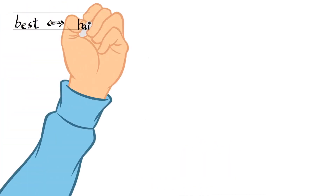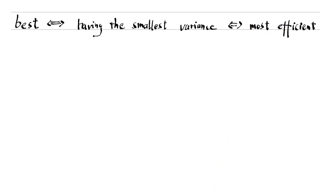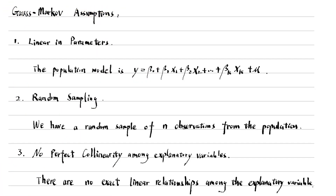BEST is defined as having the smallest variance. In other words, among all the linear unbiased estimators, OLS has the smallest variance under the five Gauss-Markov assumptions. We have discussed the four assumptions for the unbiasedness of the OLS estimators. They are also the first four Gauss-Markov assumptions.